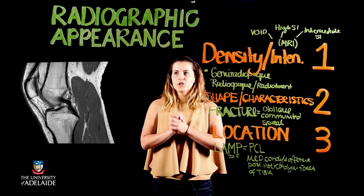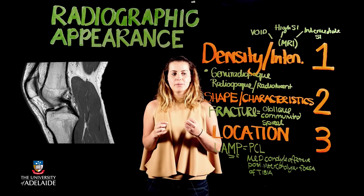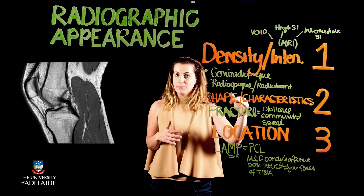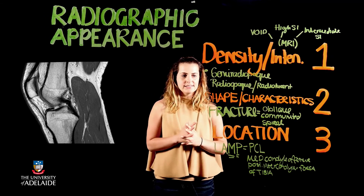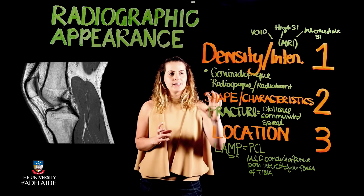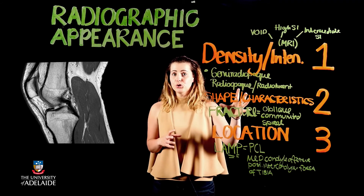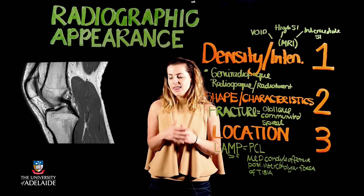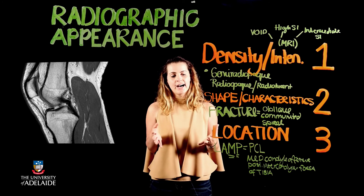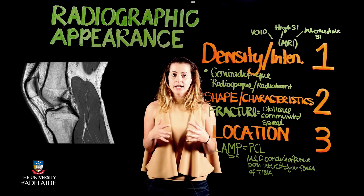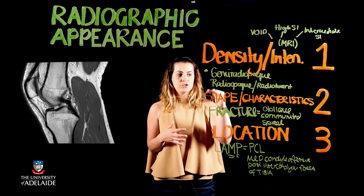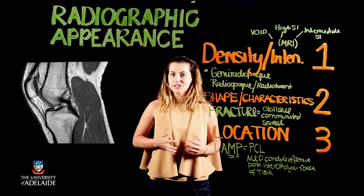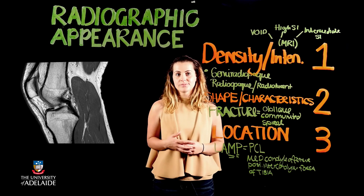Whenever asked about radiographic appearance, remember these three major components: density or intensity, shape or characteristics, and location. If you only provide two components — for example density and characteristics — that is worth only half a mark; to get full marks you need all three. Thank you very much for your attention.